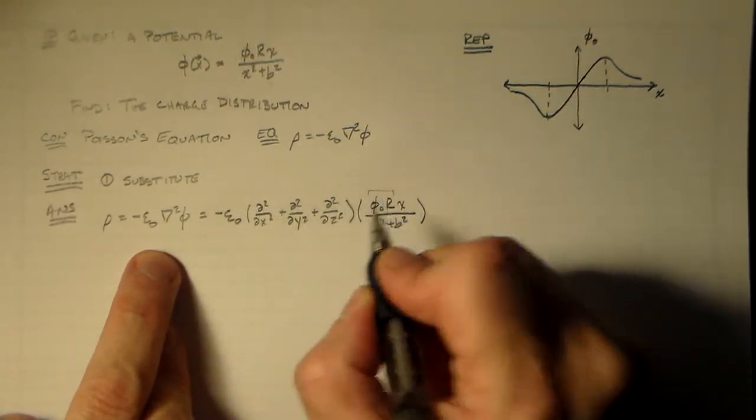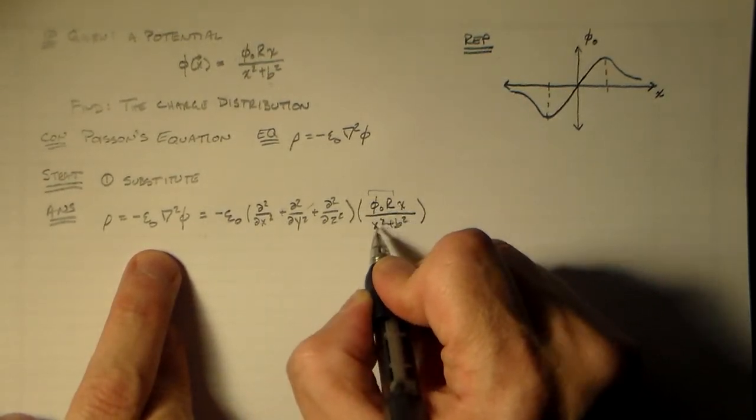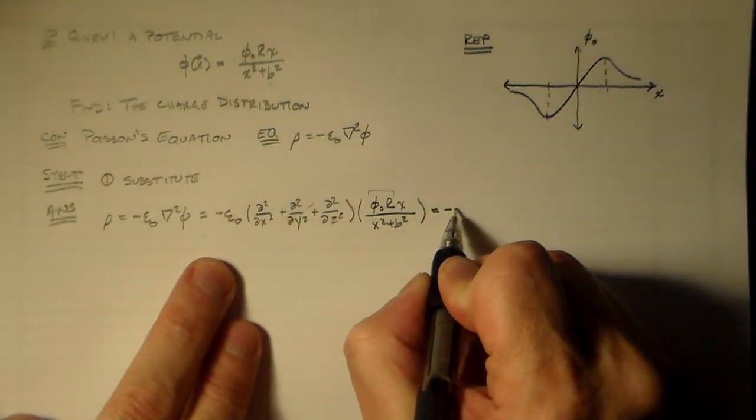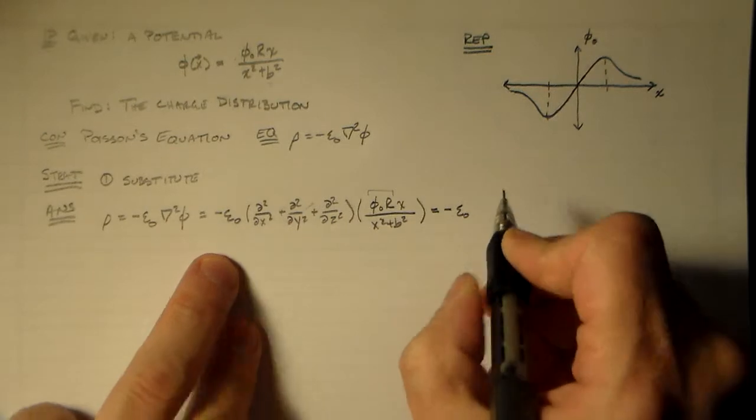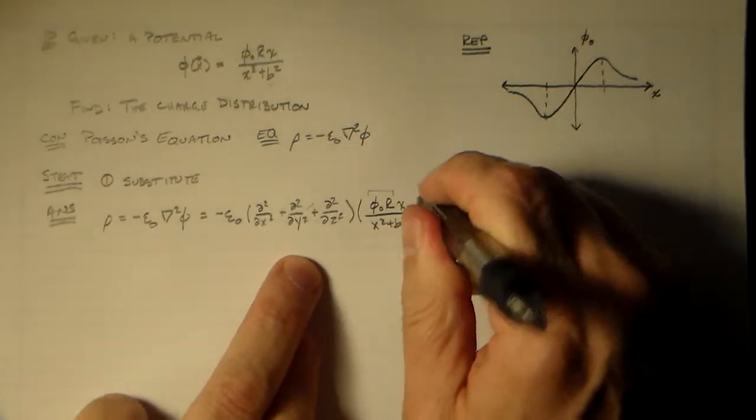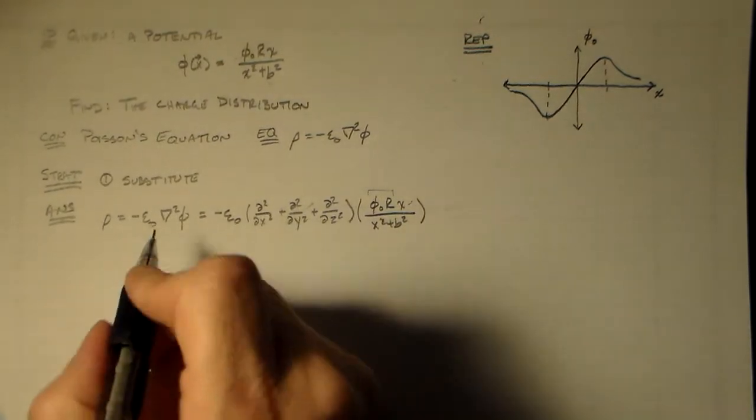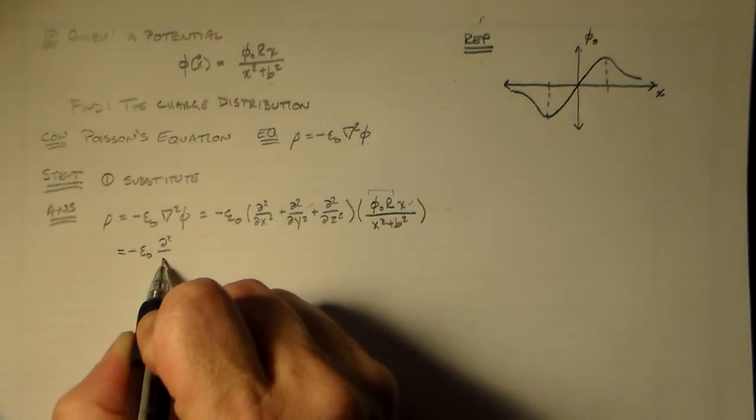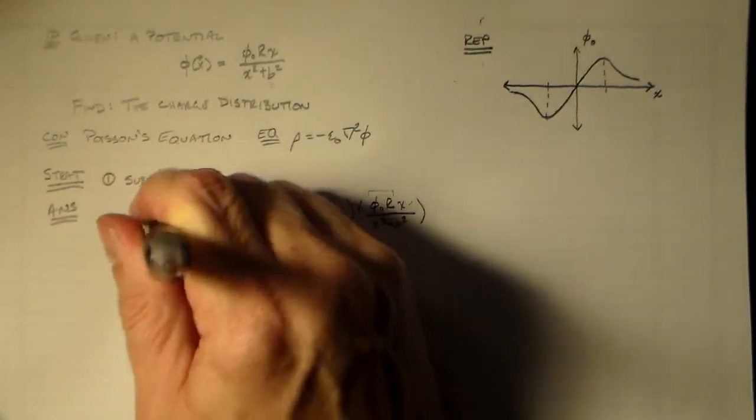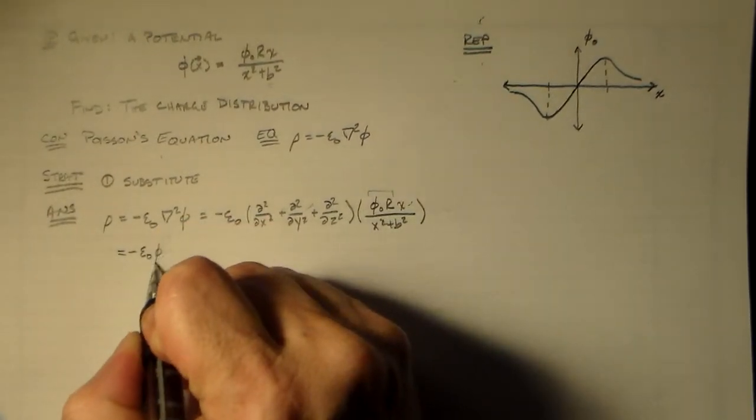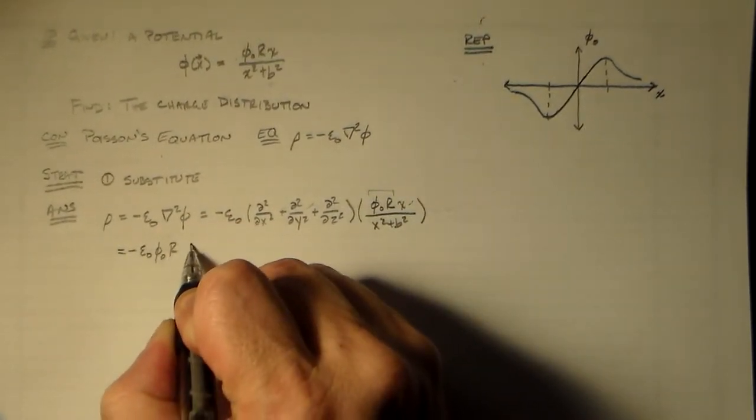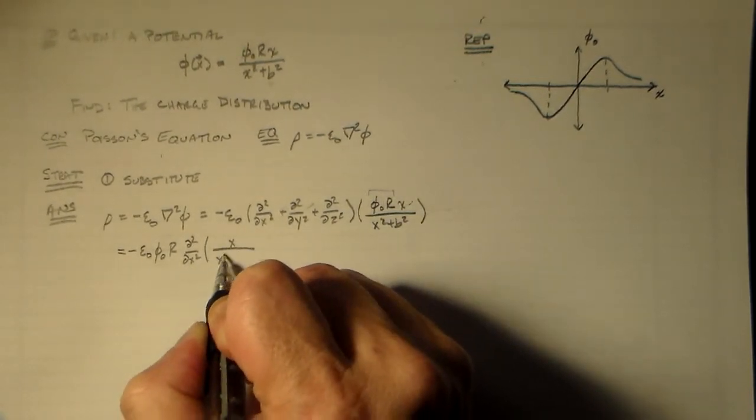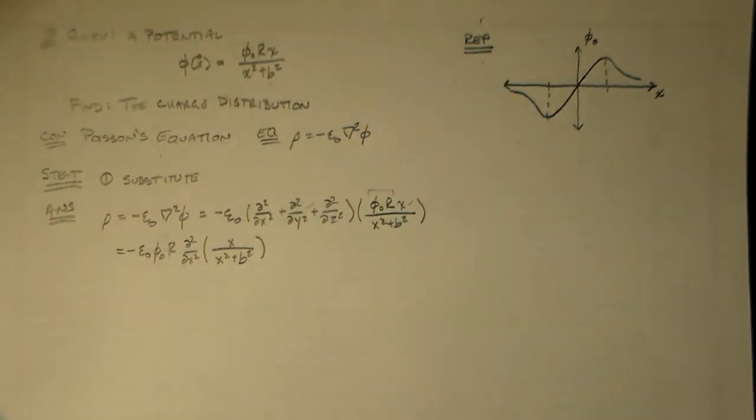So let's just go directly to an answer. We're saying that rho is equal to minus epsilon naught del squared phi. And that del squared, as we like to remember, is just d squared dx squared plus d squared dy squared plus d squared dz squared, the sum of the second partial derivatives in all three directions. And then phi is phi naught times r times x over x squared plus b squared. These two guys are constants, so they're going to come out. These two guys, there's no y or z dependence, so they disappear.